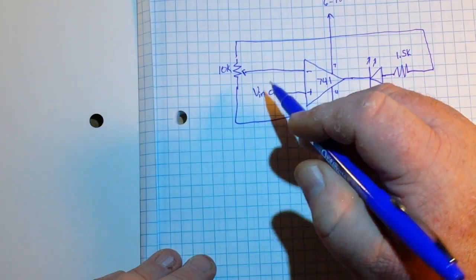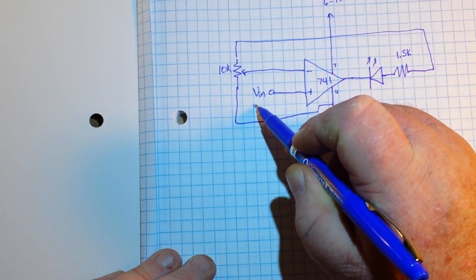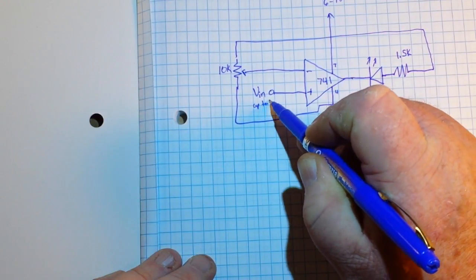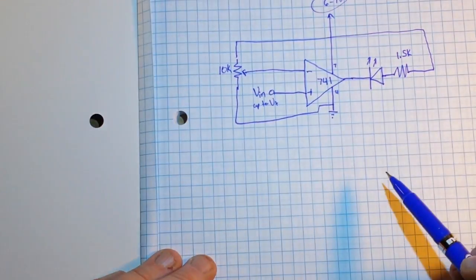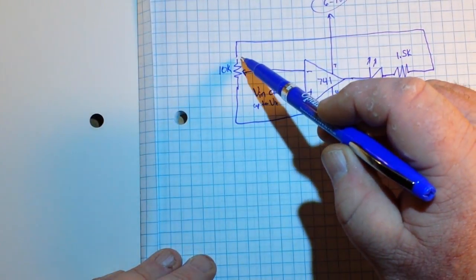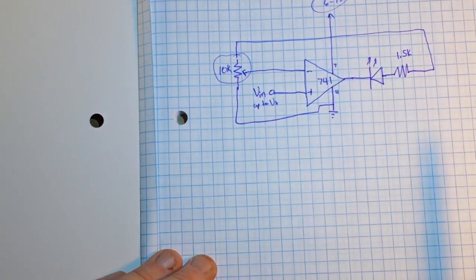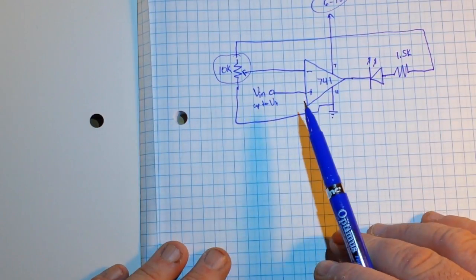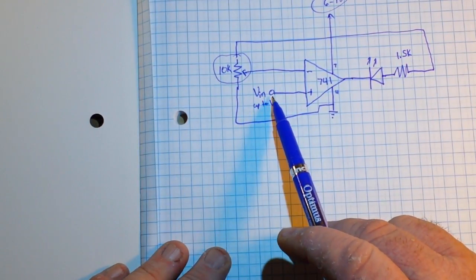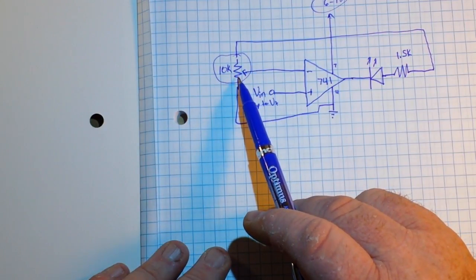So our VIN can be basically anywhere up to our V plus right here. And you can adjust your over voltage with the 10K pot. Basically, the circuit works like this: as long as the voltage coming into VIN is below the voltage set here on the 10K pot.